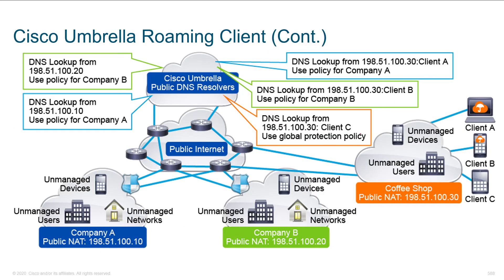The user at the coffee shop doesn't have the agent installed, while the user at Company A has the standalone Umbrella Client. At Company B, the user has the AnyConnect module. The module is an add-on for AnyConnect that does the same thing — it takes an organizational ID and embeds it in the agent. Whenever you do lookups, Umbrella confirms you're valid and knows who you are, allowing a company-specific policy to be applied.